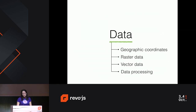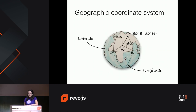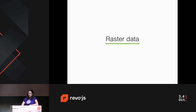Let's start with the data. I'm not sure how many of you are familiar with geographic coordinates, so a little bit of flashback to fourth-grade geography. When I talk about data, I actually mean geodata, which is data with location information. Every point on Earth can be described by two coordinates, latitude and longitude. Latitude are the parallels that go south and north. Longitude are the meridians that go east and west — meridian zero is in Greenwich.